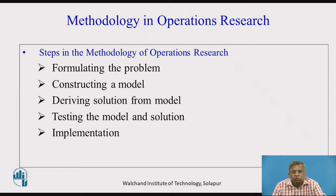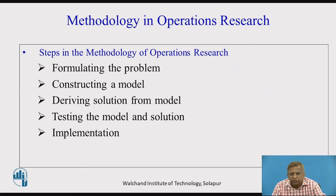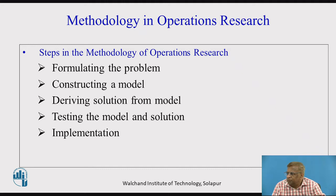Next is deriving the solution from the model. Once you have a particular model, there are standard ways of solving these mathematical problems. Solving those problems, we get the solution, and across the globe for a particular mathematical model, the solution will be unique. This is a perfect mathematical thing, so it is a perfect science.